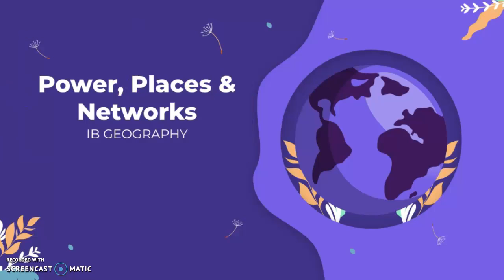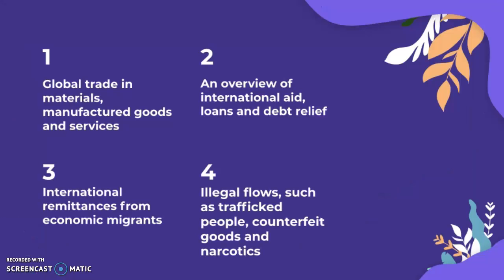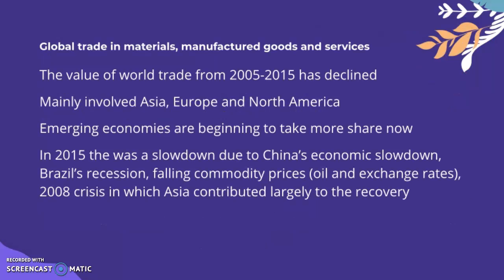This video is an overview of contemporary global networks and flows. It'll be separated into sub-topics: global trading materials, manufactured goods and services; an overview of international aid, loans and debt relief; international remittances from economic migrants; and illegal flows such as trafficking of people, counterfeit goods, and narcotics.